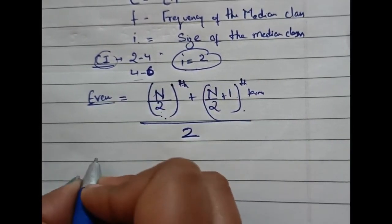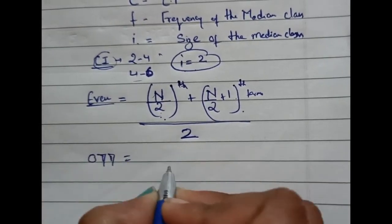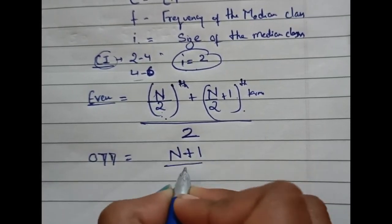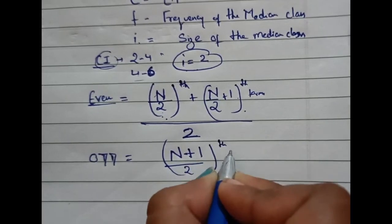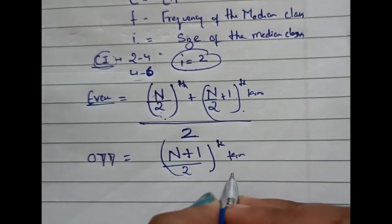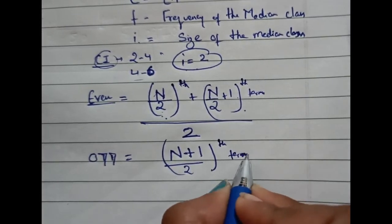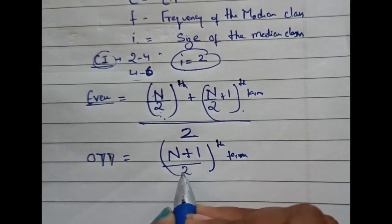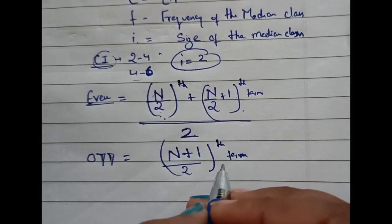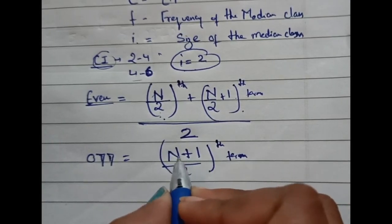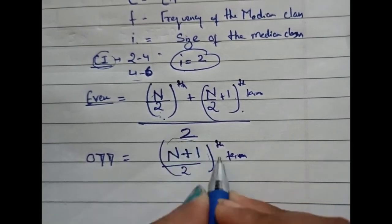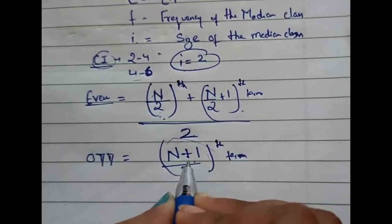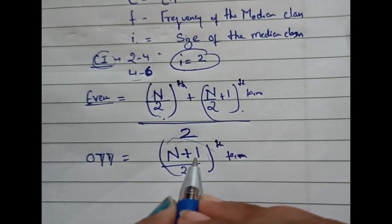If the terms are odd, as you know, you'll apply this formula: n plus 1 by 2th term. This is a simple thing. You'll just add the number of terms plus 1 and then divide by 2. You'll not divide the terms by 2—please remember this. You'll just find this term, apply this whole thing in your formula, and then look for this term in your question. One more thing: please arrange your data in ascending order first in case of ungrouped data.